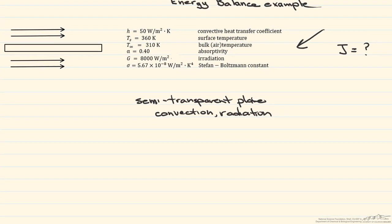We start by doing an energy balance: E_in equals E_out. Irradiation comes into both surfaces and radiosity leaves both surfaces. As for convection, if the surface temperature Ts is greater than the bulk fluid temperature T-infinity, then convection will leave the surface, as occurs here.